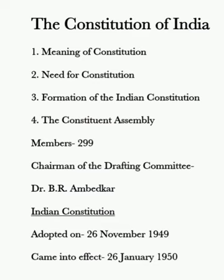Under the provisions of the Cabinet Mission Plan, the Constituent Assembly was formed in 1946 — usse pahle hi 1946 mein, constituent assembly ban gai thi. It had a total of 389 members. But when India became independent, it was divided into two parts — India and Pakistan. Usi reason se constituent assembly mein bhi change karna padha, and finally the membership of the Indian Constituent Assembly was reduced to 299.